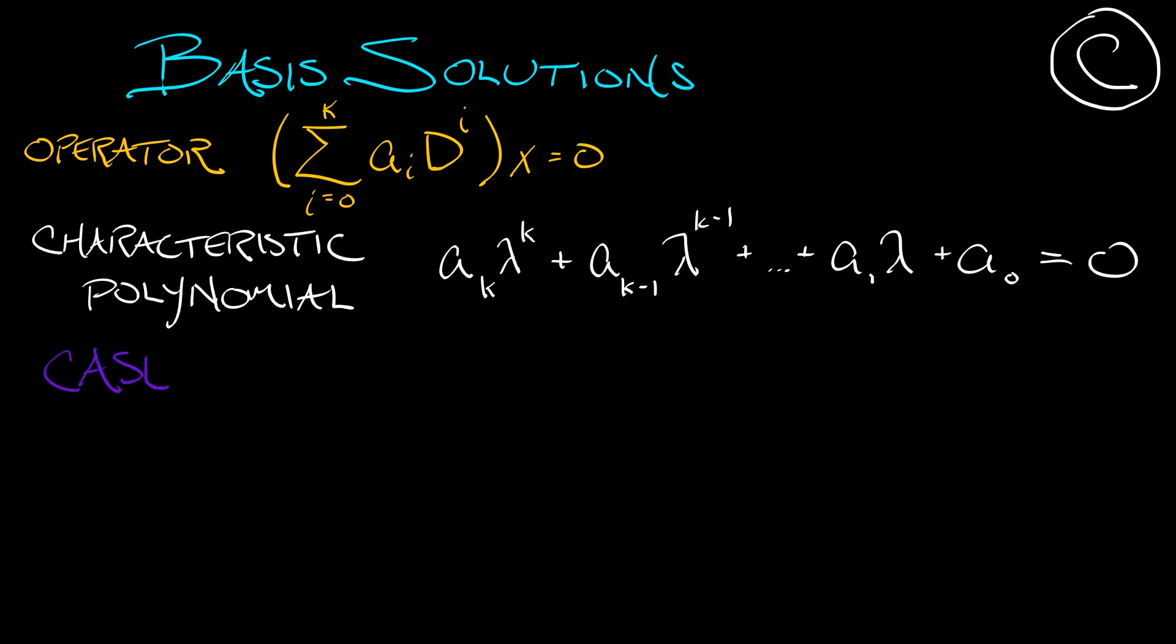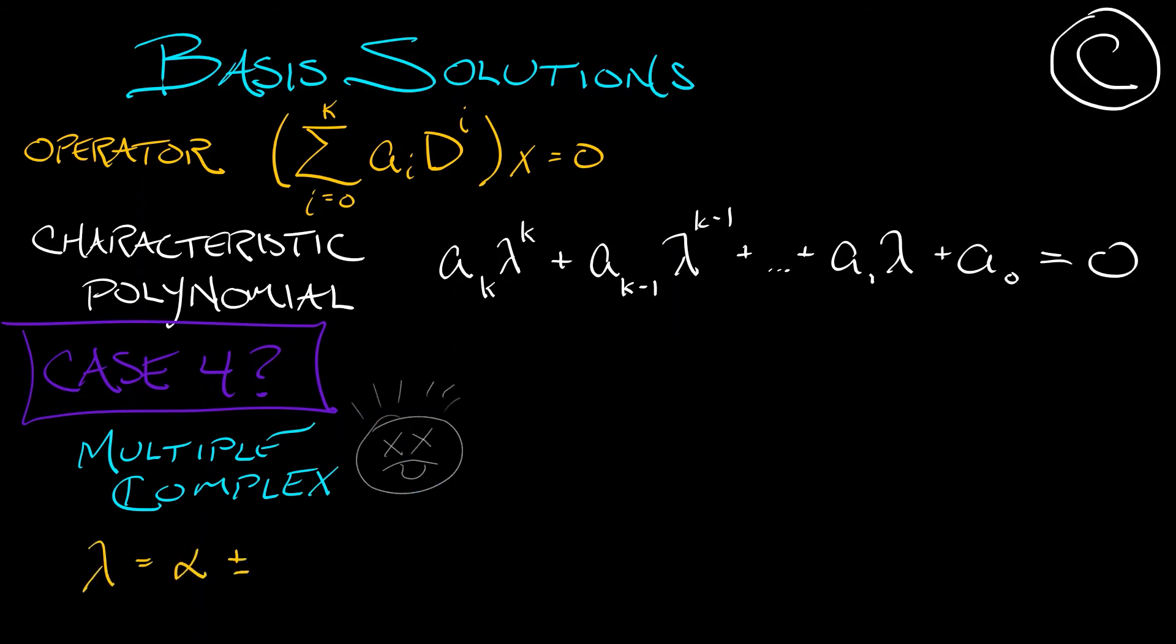And that's it, right? No more cases? Well, I'm afraid there is one more case. This is the case where you have complex conjugate roots, but with multiplicity. Let's say that these complex conjugate roots have multiplicity j. There are j pairs of them. This gets a little complicated, but maybe it's not so bad. The first pair is, as we have seen, e to the alpha t times cosine beta t or sine beta t.